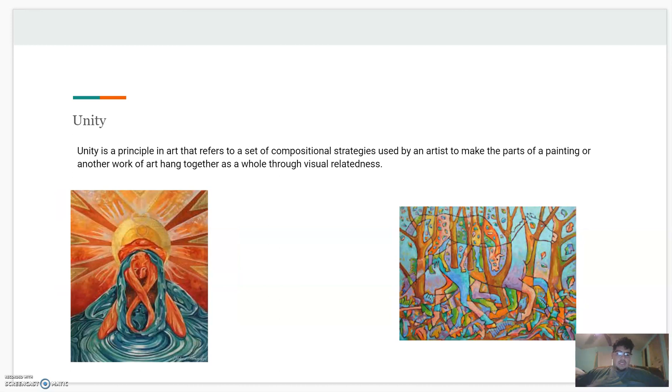Unity. Unity is a principle in art that refers to compositional strategies used by an artist to make the parts of a painting or another work of art hang together as a whole through visual relationships. If you look at this one with horses and stuff, you might just see branches, but together it comes together. It might just be a bunch of legs, a bunch of shapes.